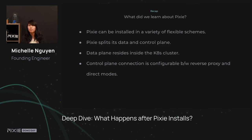To recap, what did we learn about Pixie? We learned that Pixie can be installed in a variety of different ways. We also learned how Pixie is implemented by splitting its services into two planes — the data and control plane. And by separating these planes between Pixie Cloud and the Vizier running on your cluster, we're able to retain the data that we collect all within your cluster behind your network. Finally, we talked about how you can configure your data access so that you can use either reverse proxy or direct mode in order to determine how that data is accessed.